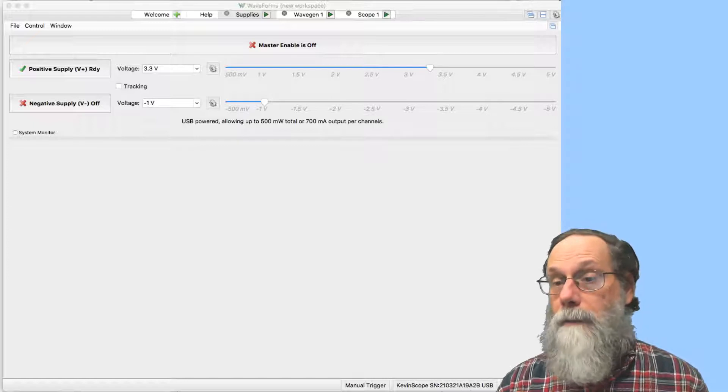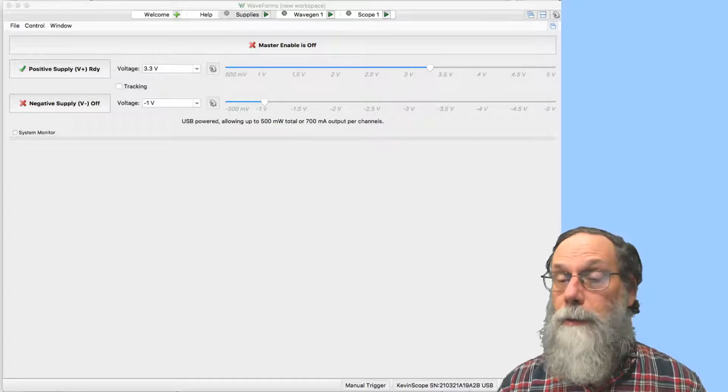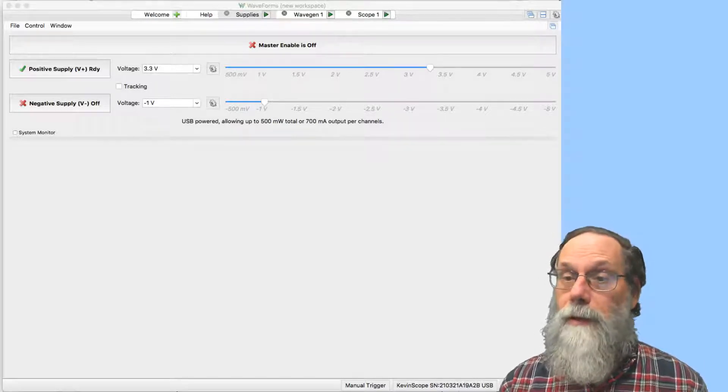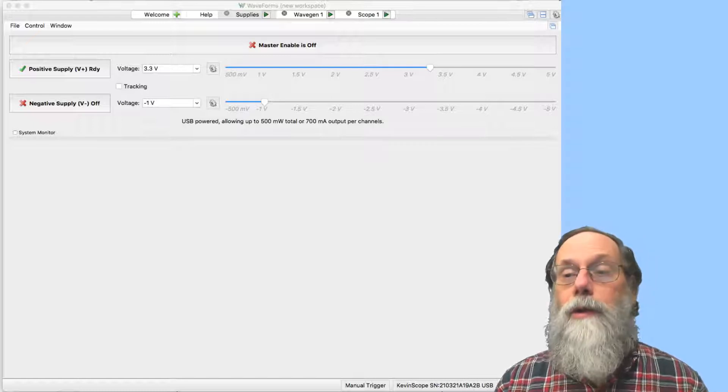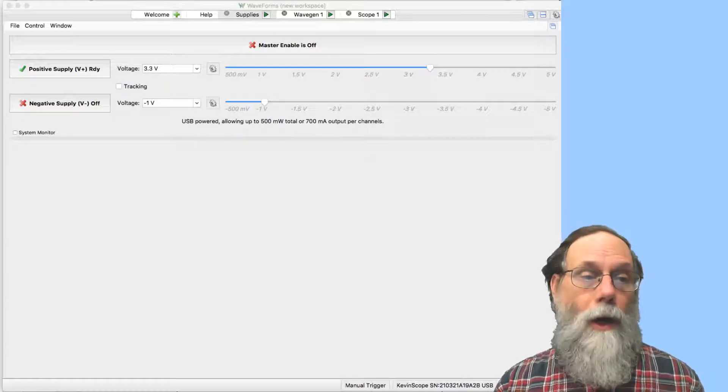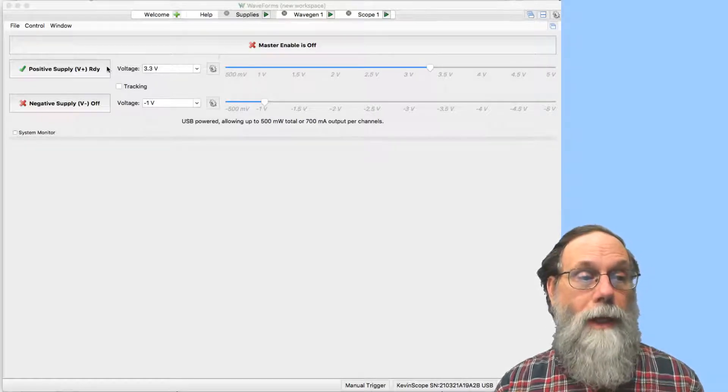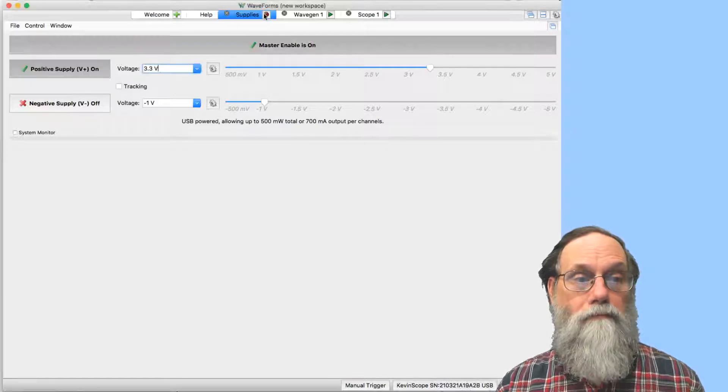So I could have picked 5 volts, which is a perfectly acceptable value, or I picked, in this case, 3.3 volts, which is also an acceptable value. If you do the 3.3 volts power supply, you can also use the signal with Teradac. So I've got my power supply set up to be 3.3 volts, and I can turn it on.